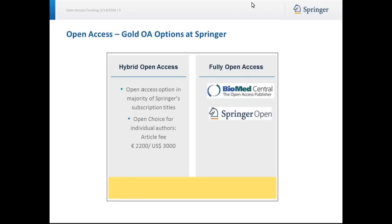We have two gold open access options at Springer. We have the hybrid open access option, which we call Open Choice, and is an open access option in a majority of Springer subscription titles. Open Choice is available to the individual author for an article fee of 2,200 euros or 3,000 US dollars. We also have our fully open access journals.